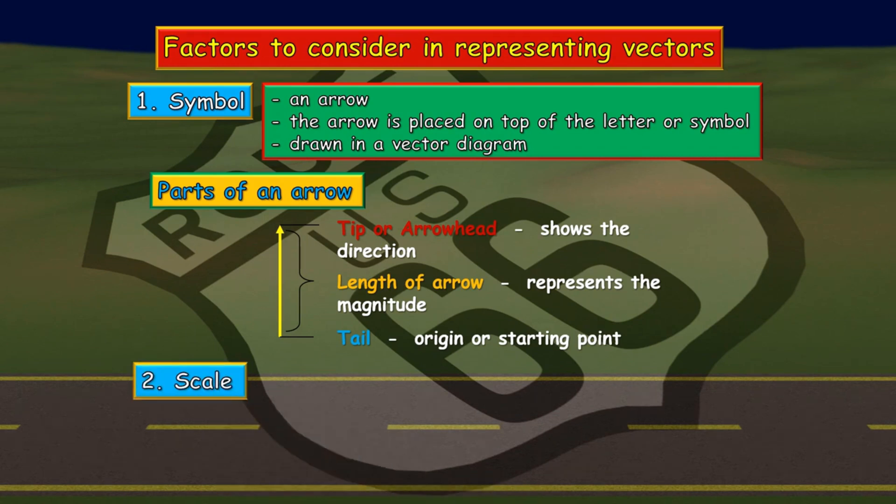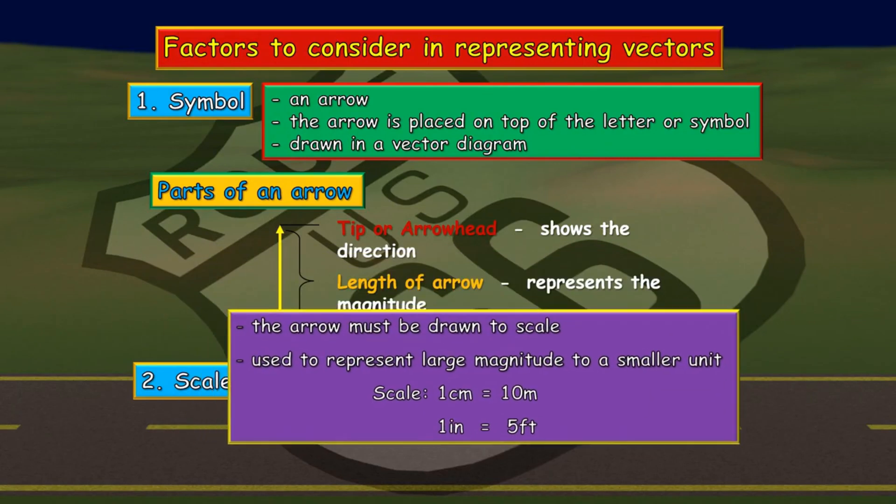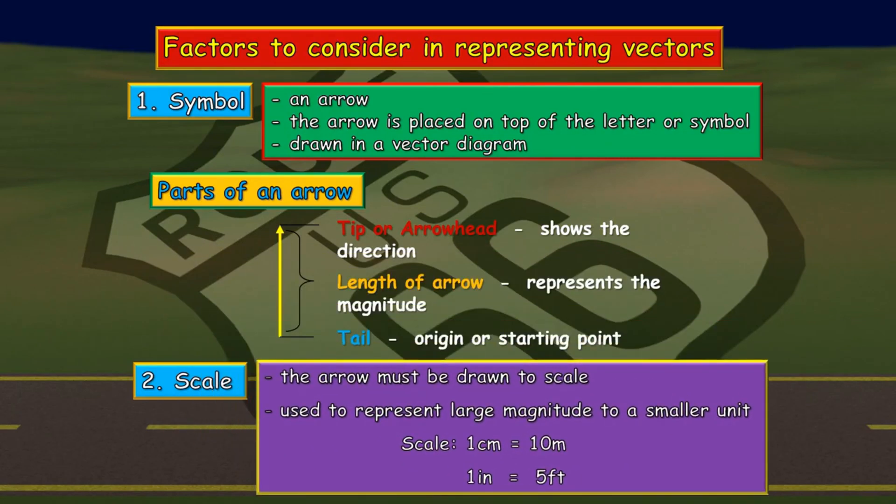Aside from this, we need to do the scaling because there are some large magnitudes that we must put into smaller ones so that it can fit into certain materials that we are using. Scaling is used to represent large magnitude to smaller units. Examples: 1 cm represents 10 meters and 1 inch represents 5 feet.